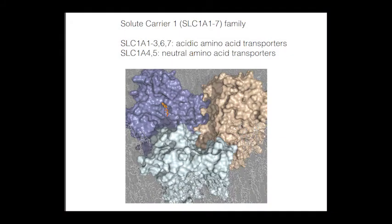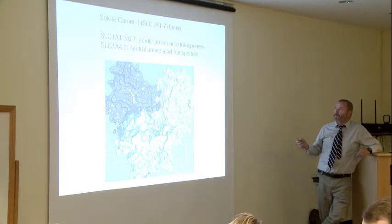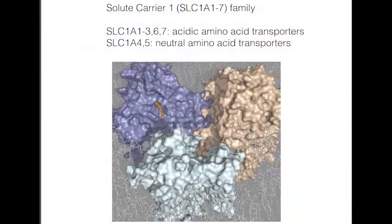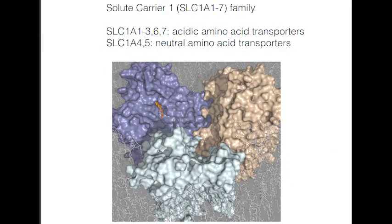SLC1 transporters are members of a family of solute carriers. The nomenclature for membrane transporters — which make up a huge fraction of the genes expressed in mammals — are numbered one through approximately 45. The SLC1 transporters have seven members, seven genes in this family expressed in mammals. It turns out five of them are glutamate transporters. From the standpoint of neuroscience, virtually all the focus on this family has been on those five genes because glutamate is the predominant excitatory neurotransmitter in the brain.